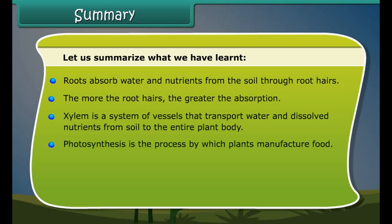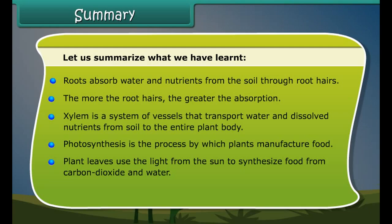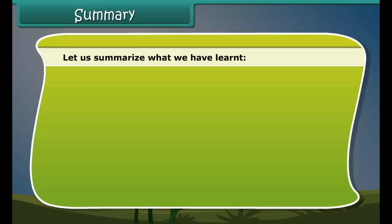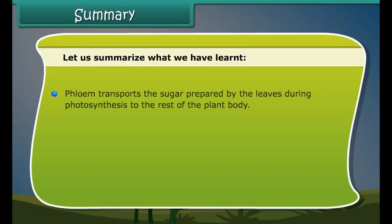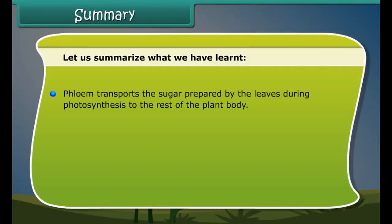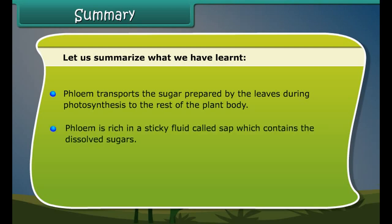Photosynthesis is the process by which plants manufacture food. Plant leaves use the light from the sun to synthesize food from carbon dioxide and water. Sugar and oxygen are the end products of photosynthesis. Phloem transports the sugar prepared by the leaves during photosynthesis to the rest of the plant body. Phloem is rich in a sticky fluid called sap which contains the dissolved sugars.